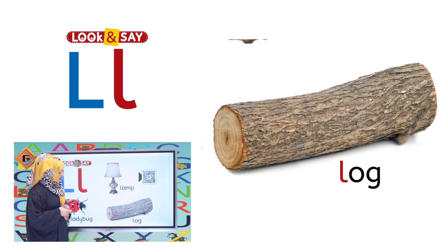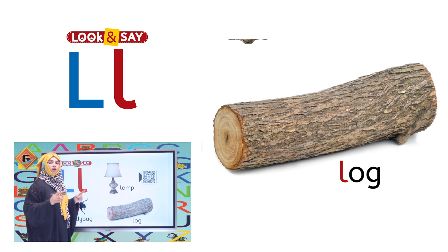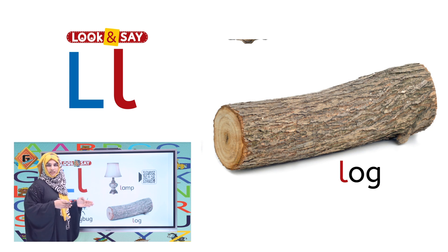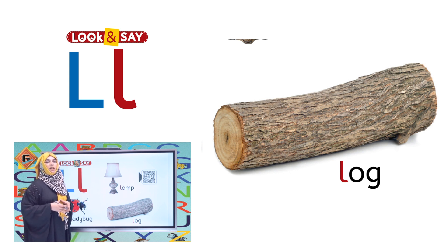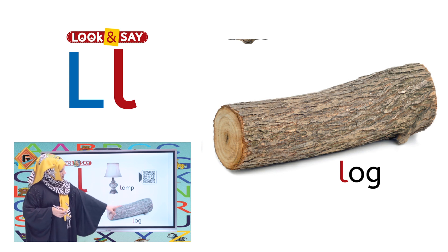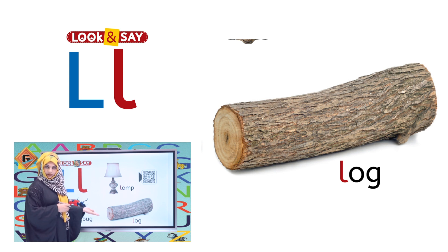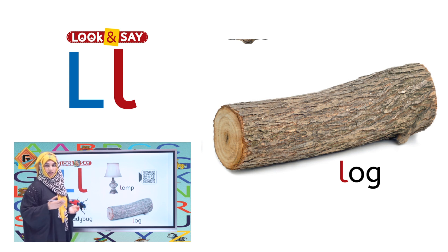Lamp start ho raha hai L sound se — L, L, lamp, lamp. Aur aage dekhen — what is it? It's a log! Log, log. Log is a piece of wood. Yeh dekhen ki L — lakdi ka ek piece hai. Agar lakdi ko aap chhote chhote pieces mein kaat lein, to usko hum bolte hain log. L, L, log. And this log is long — it's a long log! Is log se hum baad mein cutting karte hain for furniture and different things.